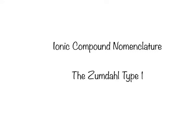In this video, we're going to talk about ionic compound nomenclature, specifically of the Zumdal Type 1. The Zumdal Type 1 is a nomenclature developed by Professor Zumdal at the University of Illinois-Champaign-Urbana. The Type 1 nomenclature follows the IUPAC guidelines, that's the International Union of Pure and Applied Chemistry. These are the folks who set up all of our rules. The hallmark of the Zumdal Type 1 is that the cations only form one possible charge.